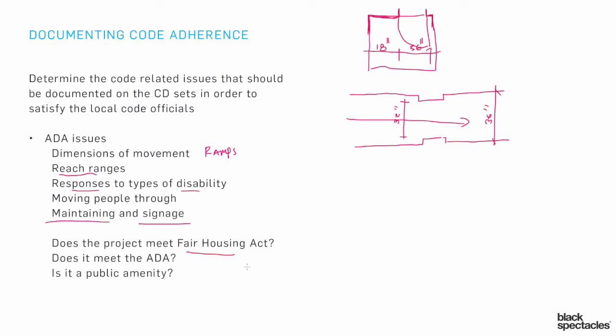One of the big questions when talking about disability issues in CD sets is always: does this particular building need to meet certain levels of accessibility? Essentially all buildings should meet at least basic accessibility ideas, especially for public spaces. But different situations will drive that further. For example, if I have public money in a project, that's going to mandate greater accessibility. If I'm building public or affordable housing with public money, I not only have to meet the Fair Housing Act generally, but that also requires a certain percentage of accessible or adaptable units.